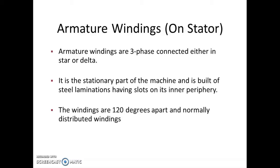These are three-phase windings which are connected either in star or delta. Since stator is the stationary part of the machine, the armature winding wound in the slots of the stator is also stationary. Stator is made up of steel laminations having slots on the inner periphery. The windings on the stator, that is the armature winding, are 120 degrees apart and normally they are of distributed type.